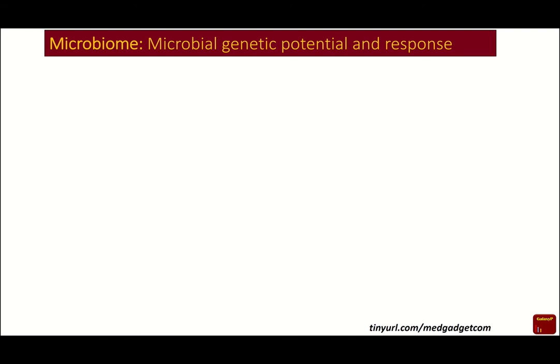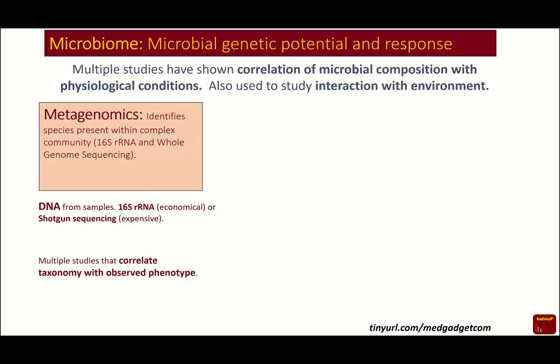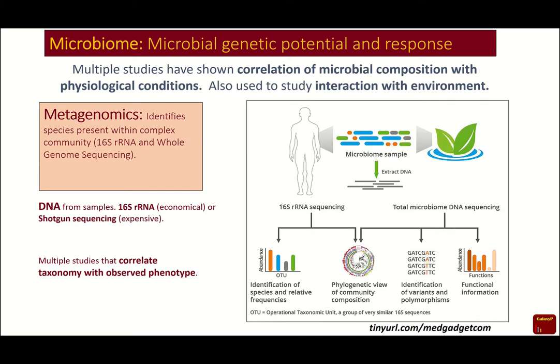In order to study the gut microbiome, researchers have used methods such as metagenomics, wherein DNA from either the gut microbiome or from environmental samples is extracted and subjected to either 16S rRNA studies or whole genome sequencing studies. The 16S rRNA studies, also called amplicon sequencing, help identify the taxonomic composition of the microbiome, while whole genome sequencing might help identify the genes present and predict some of the functions that can be expressed by this microbiome. Multiple studies using metagenomics have helped to correlate taxonomy with the observed phenotype.